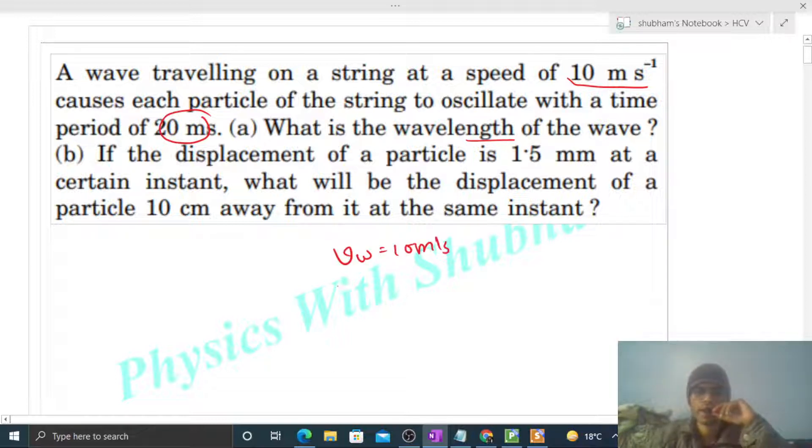Fine, so what is given? Wave speed is given 10 meter per second and time period of SHM of the particles of the wave is given, that is 20 millisecond, that is 20 into 10 raised to the power minus 3 second. We need to find out the wavelength.